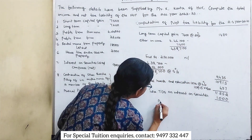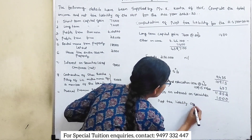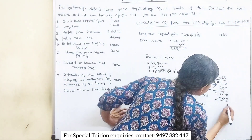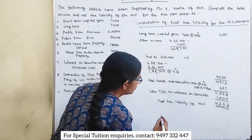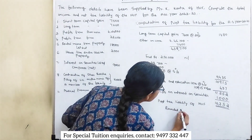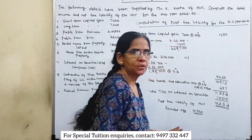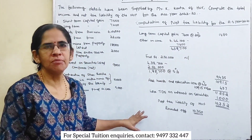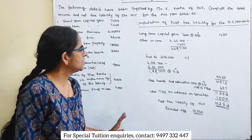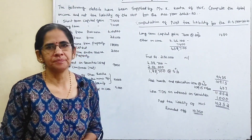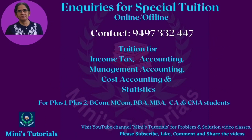Net tax liability of H.U.F. is 10,350, rounded off. This is H.U.F. net tax liability. We computed using the same procedure. This is the problem. Thank you very much.